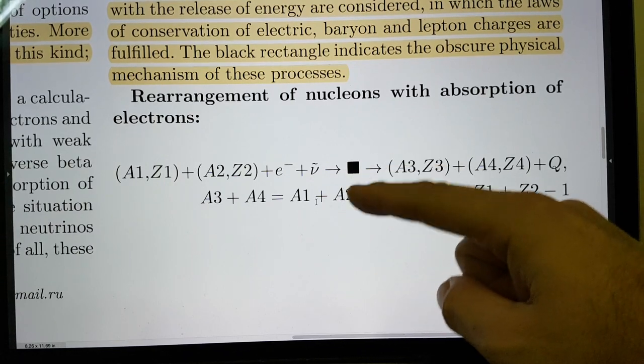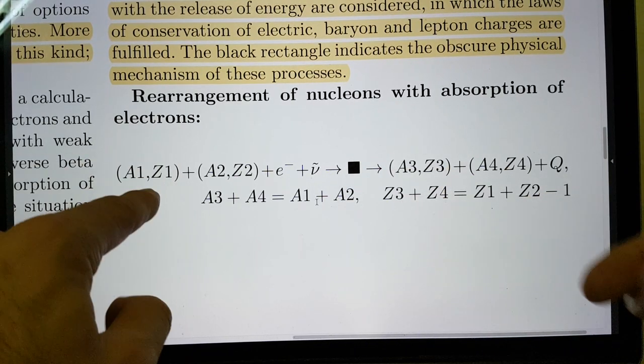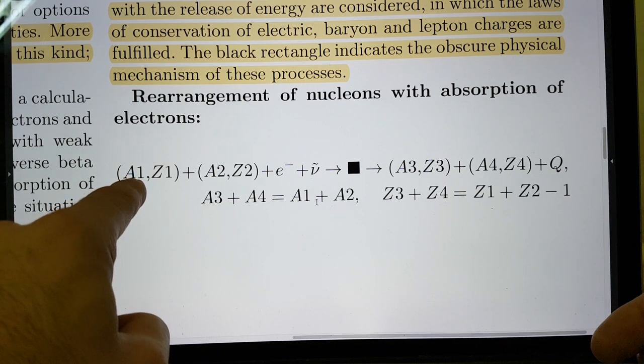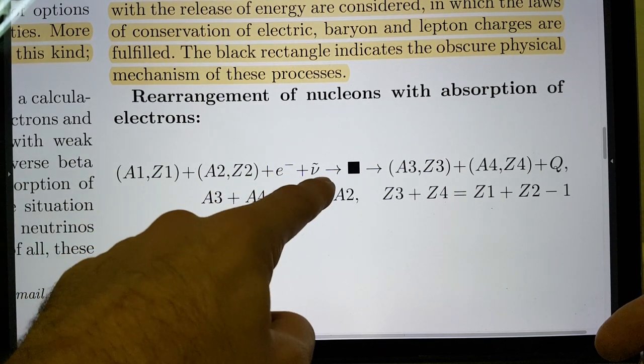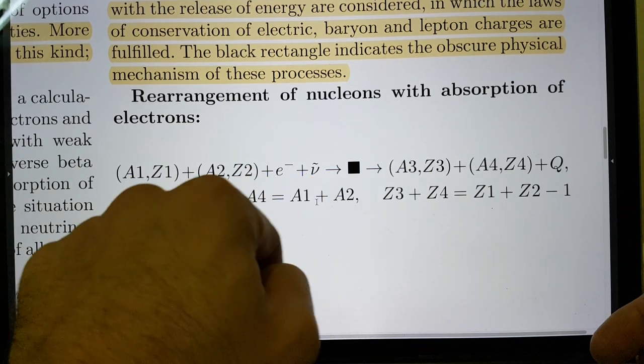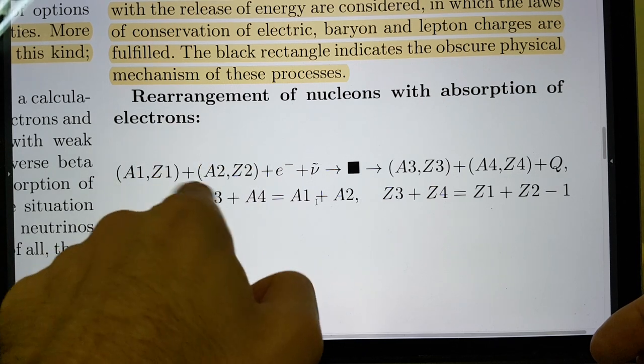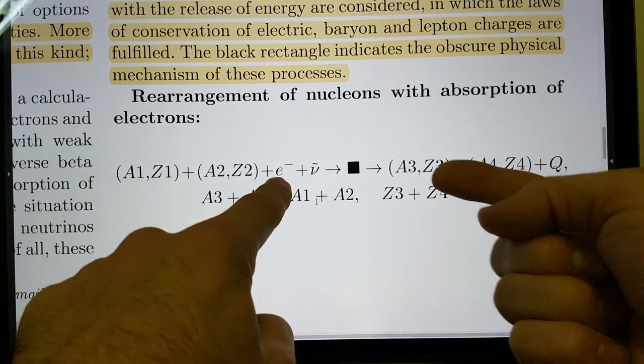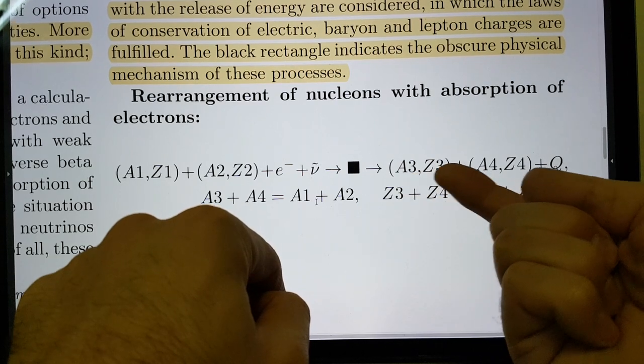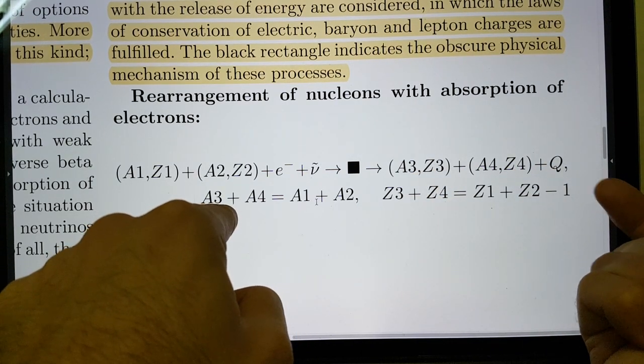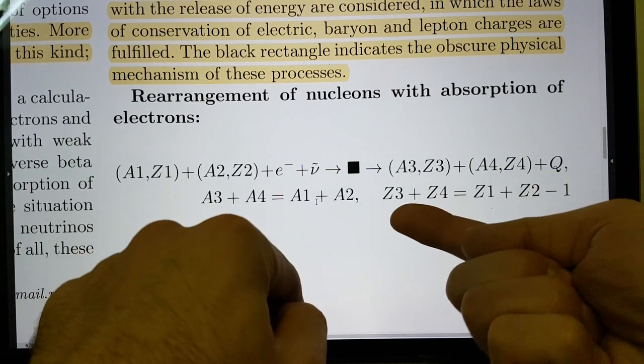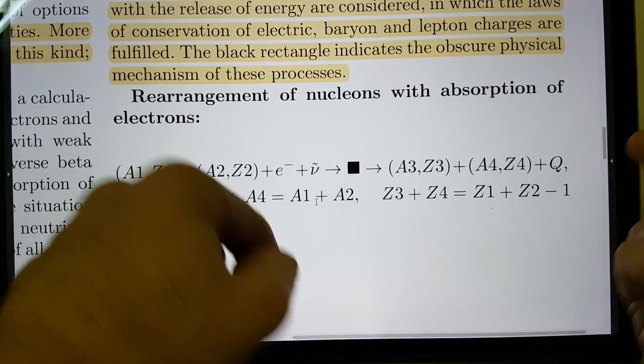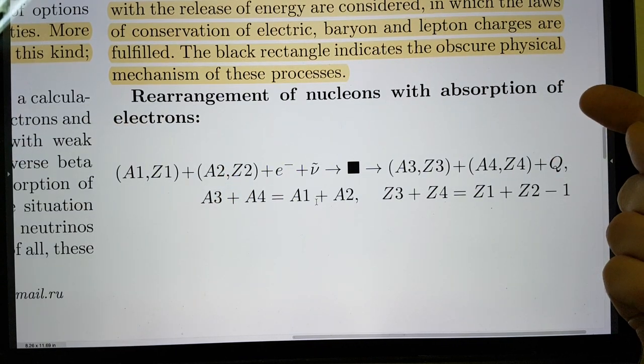He's saying that you've got your Z numbers here. So that's the number of protons and this is the atomic number. So A1Z1, A2Z2 plus an electron plus an antineutrino. They combine with a proton in one of these to give you an extra neutron. We end up with A3Z3 plus A4Z4 plus Q. So essentially saying you start off with these nucleons and you end up with these nucleons and there's a minus one in terms of protons in one of the Z numbers. That is rearranging nucleons with the absorption of electrons.